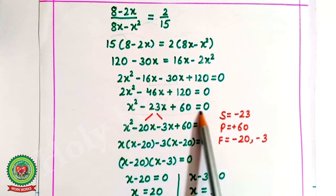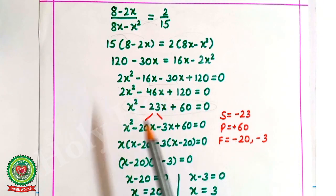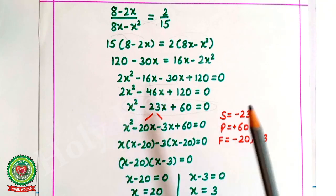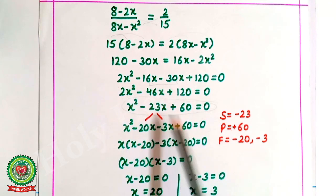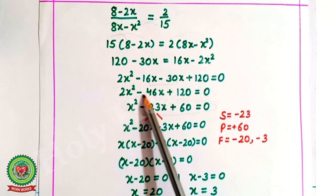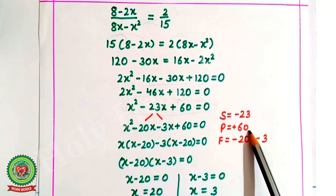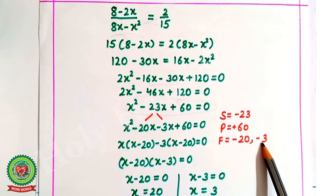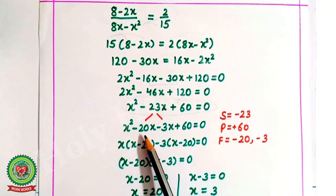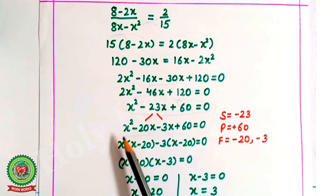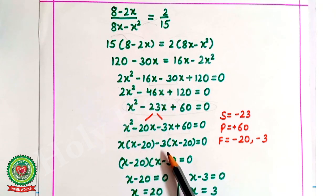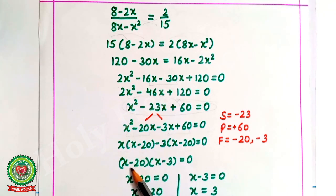This is in the form of a quadratic equation, solved by factorization. The sum is minus 23, the product is plus 60, and the factors are minus 20 and minus 3. Splitting the term: x squared minus 20x minus 3x plus 60 equals 0. After pairing and taking common: x(x minus 20) minus 3(x minus 20) equals 0, so (x minus 20)(x minus 3) equals 0.